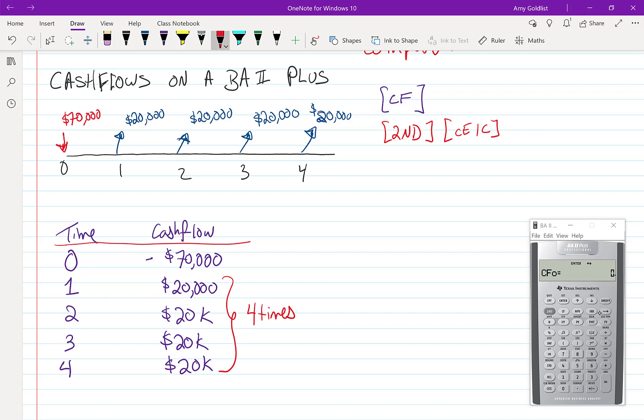So let's put in our cash flows. An important thing is that negatives are negative and positives are positive. CFO means cash flow at time zero. That here was $70,000. And I'm putting in that negative and I'm pressing enter. So let's write down what I put in: 70,000 enter. And the enter is really important.